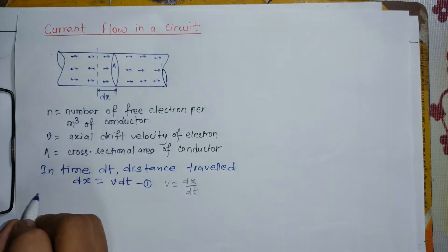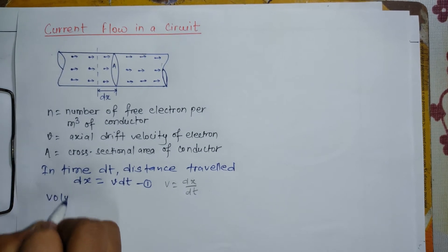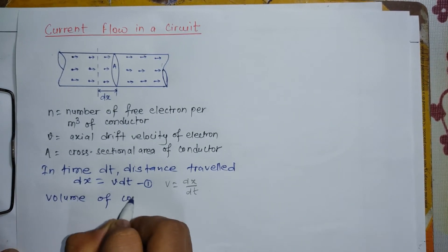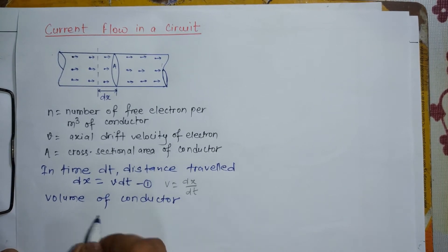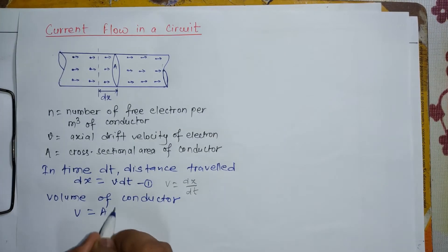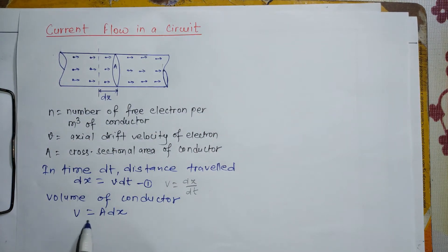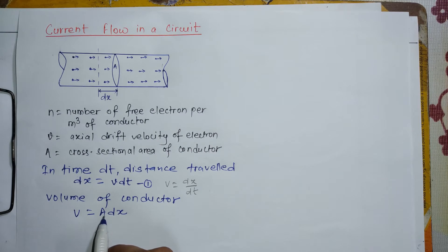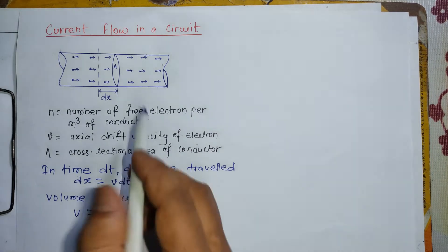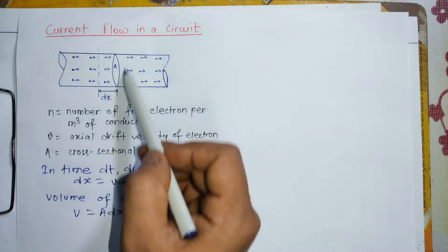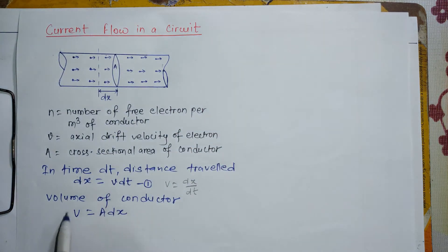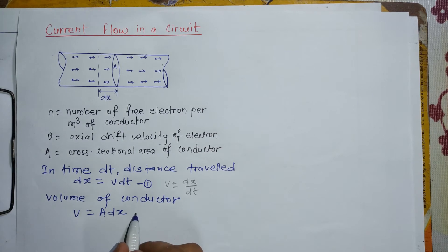The volume of the conductor element is equal to A times dx. This is a cylinder, and the volume of the cylinder is equal to the cross-sectional area multiplied by its length. Here A is the cross-sectional area and dx is the small length of the small portion. So volume V = A·dx. This is equation 2.